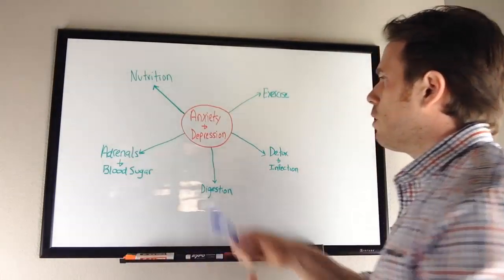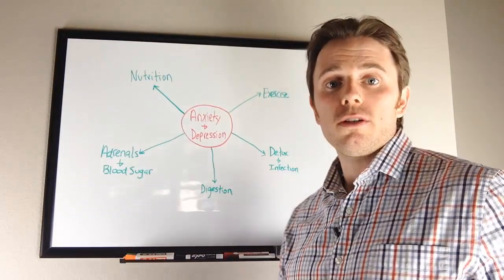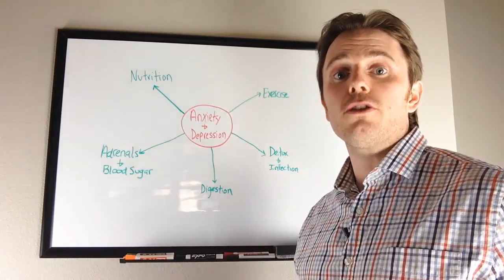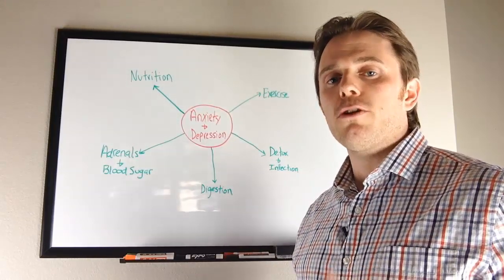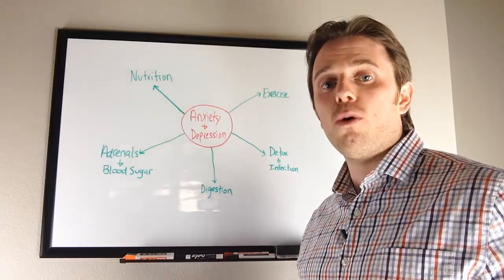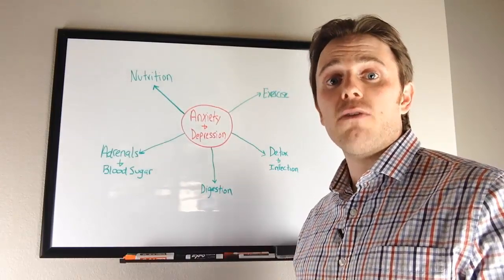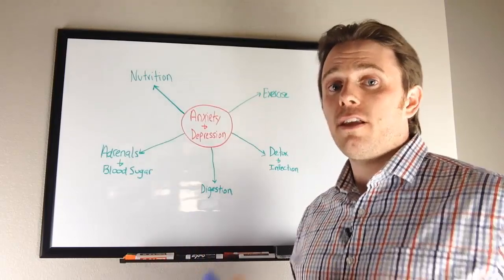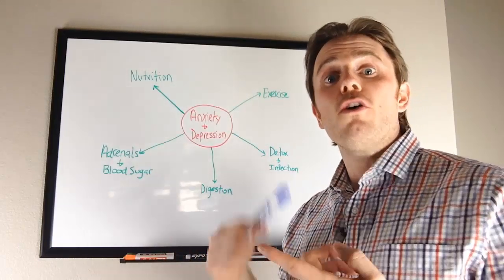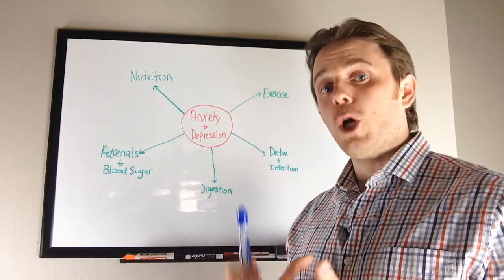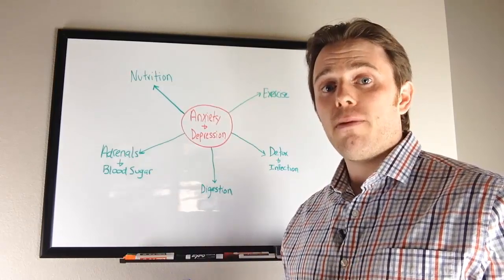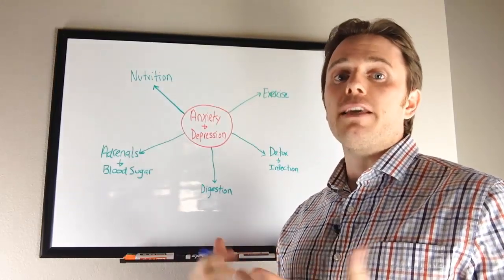Nutrition is really important. We have to have the right nutrients—certain B vitamins, certain amino acids such as 5-HTP or L-tryptophan, L-tyrosine. These are important amino acids that are going to produce the raw material for serotonin, for dopamine, for GABA—a lot of these neurotransmitters help make you feel good.